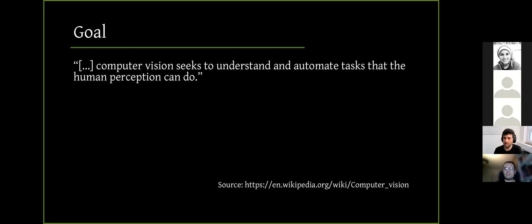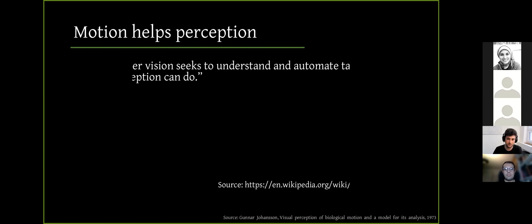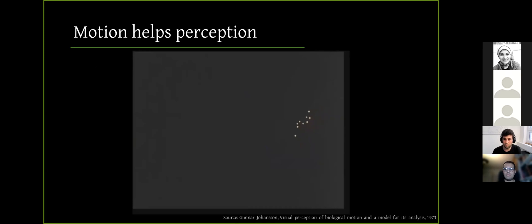So we are here for a CVPR conference, right? And let's look at a formal definition of computer vision. Wikipedia defines it as computer vision seeks to understand and automate tasks that the human perception can do. So briefly, it is defined as the understanding and imitation of human perception. And proven by a long line of research efforts, motion is one principle cue that helps perception.